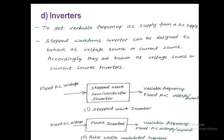The next type is PWM inverters — pulse width modulated inverters. Again for fixed DC voltage, if you want variable frequency and fixed AC voltage or current, we use PWM pulses to get the required frequency. In both cases we can also control the voltage.